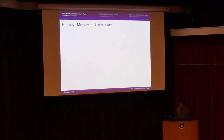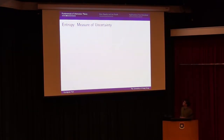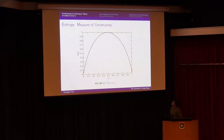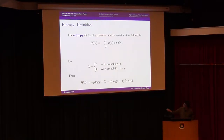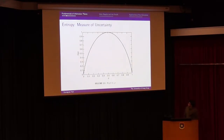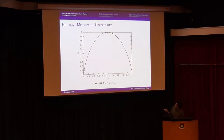What does entropy measure? In information theory, it measures the level of uncertainty within a random variable. Looking at the H(p) function: when p equals zero or p equals one, the entropy H(p) is zero. But when p equals 0.5, the entropy reaches its maximum.